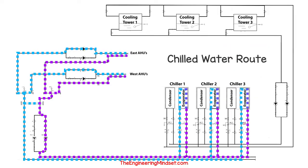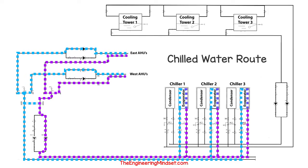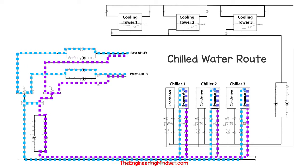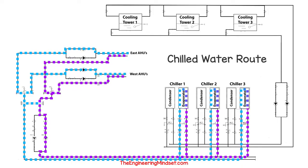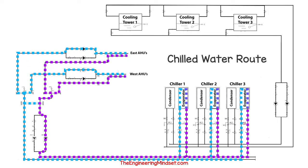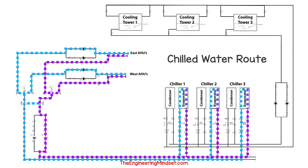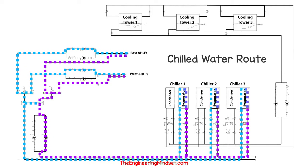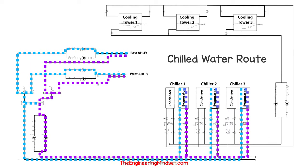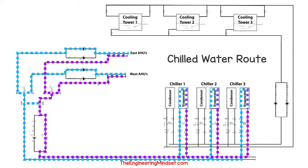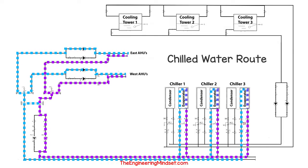This is a simplified version of the actual chilled and condenser water schematic of the building. As you can see, it has three chillers and three cooling towers, and this feeds the AHUs in both the east and the west side of the building. I've only animated the flow path of the chilled water for this example, as that's what we're measuring, although the procedure will be the same if you wanted to measure the condenser water. Note that not all three chillers need to run — this would only occur at maximum demand.